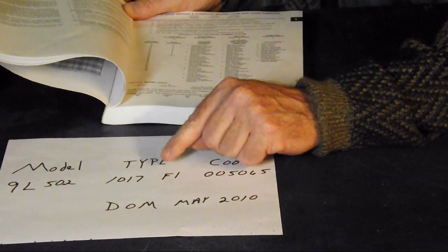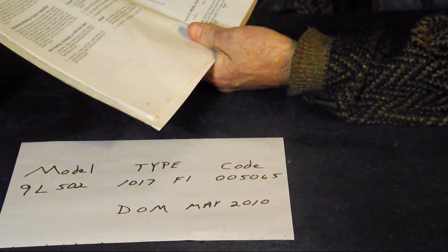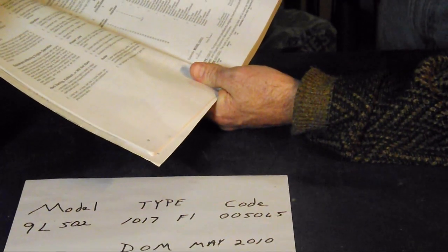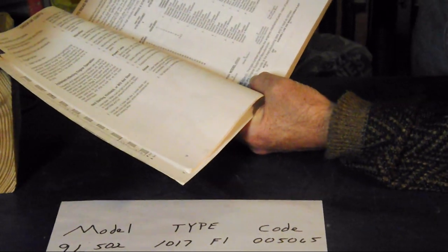Then we talk about the type. Now the type number identifies the engine mechanical parts, color of paint, decals, governor speed, and original equipment manufacturer.